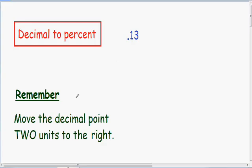I wrote this for you in green in the bottom left part of the screen. When going from decimal to percent, you need to move the decimal point two units to the right. So that's what I'm going to do right now with this example.